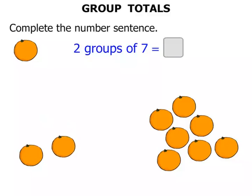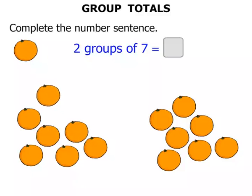One, two, three, four, five, six, seven. We've got another group of seven. So now we have two groups of seven.